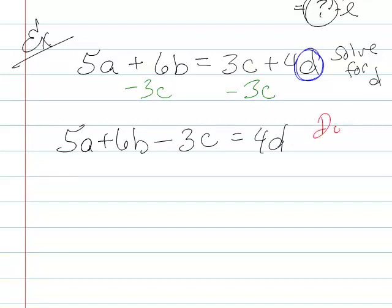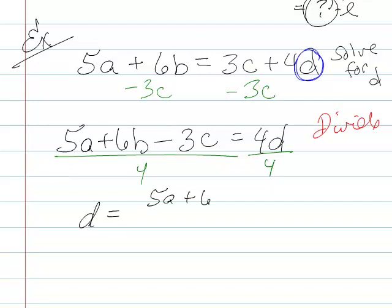And I'll get 5a plus 6b minus 3c equals 4d. Now I can divide because the d is all by itself. And I'll get d equals 5a plus 6b minus 3c over 4.